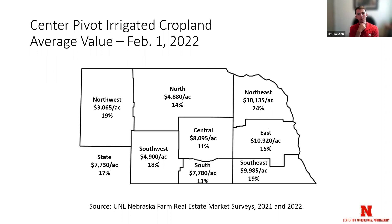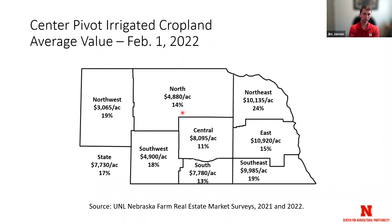The type that's always of interest is center pivot irrigated cropland. Overall for the state, we've seen fairly robust gains — the state average is up to $7,730, about 17% higher. Other areas, especially northeast Nebraska, noted a very strong increase. You're getting well over $10,000 per acre in the east and right around $10,000 in other areas. There's a lot of interest in purchasing real estate.